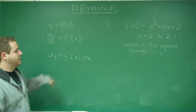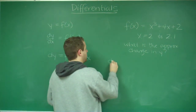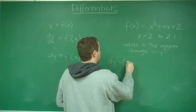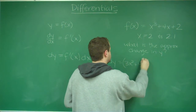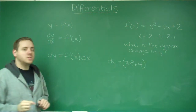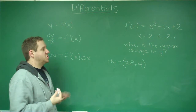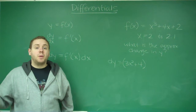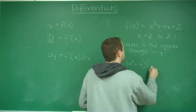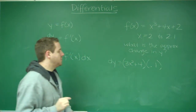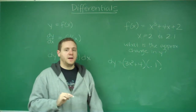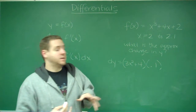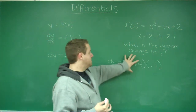We use the formula dy equals f prime of x dx — dy is exactly what we're looking for. We take the derivative of the function, which is 3x squared plus 4, and multiply that by the change in x. Since x is going from 2 to 2.1, the change is a positive 0.1. When doing a differentials problem, you always plug in what x started at, and then think about how much it changed.